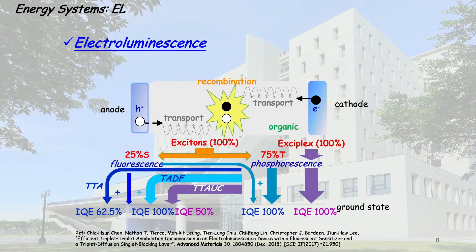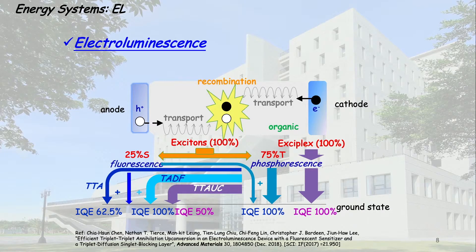For the energy system in electroluminescence, we apply electric current inside and have 100% exciton formation — 25% singlet and 75% triplet. The phosphorescence emission mechanism achieves perfect IQE, while the fluorescence emission mechanism has below 100% IQE. The long-lifetime mechanism — TTA and TTA-UC — has a very low IQE compared to others.